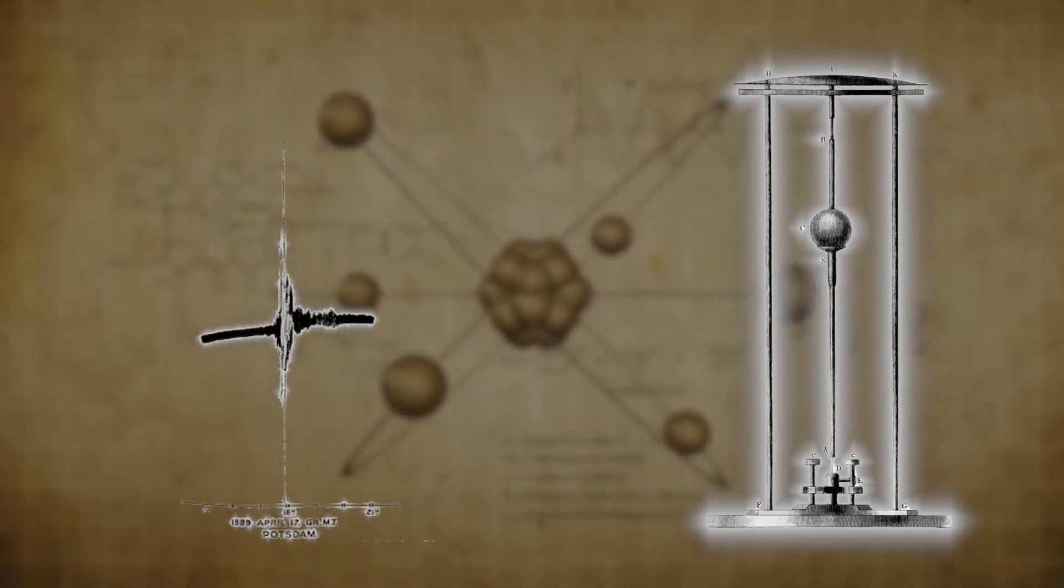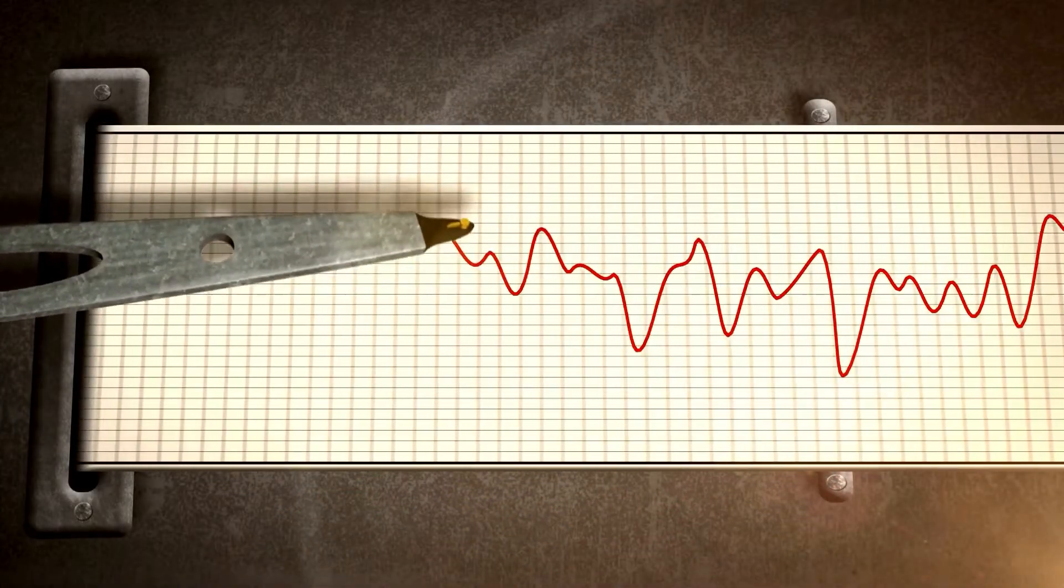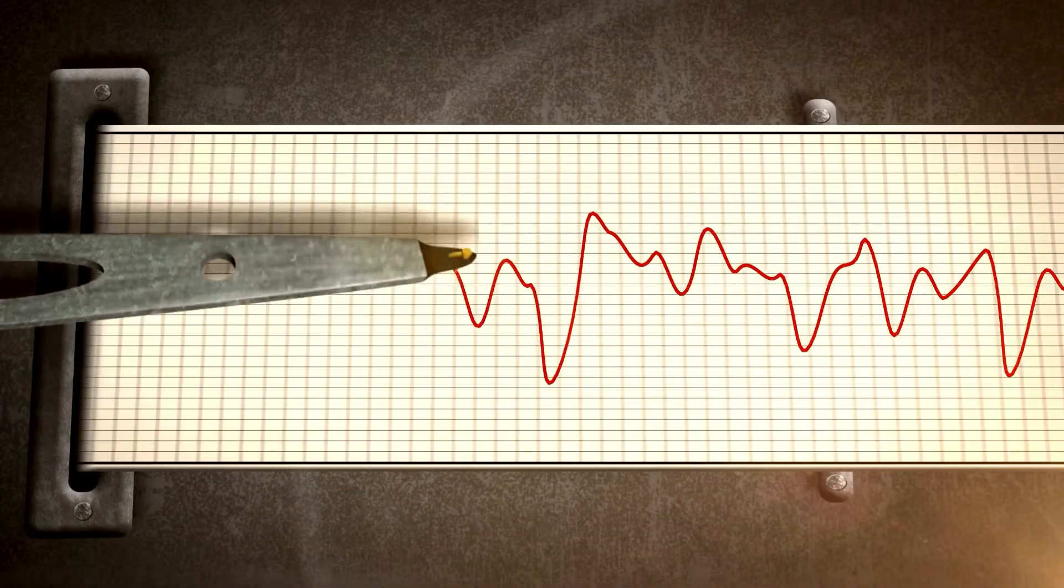What is a seismograph? Simply put, a seismograph is a recording device that scientists use to measure earthquakes. Its goal is to accurately record seismic waves during a quake.